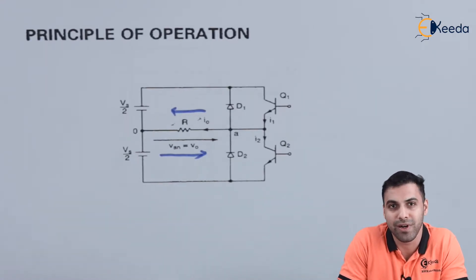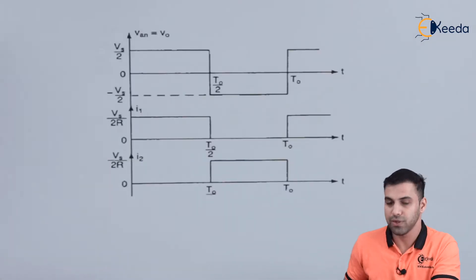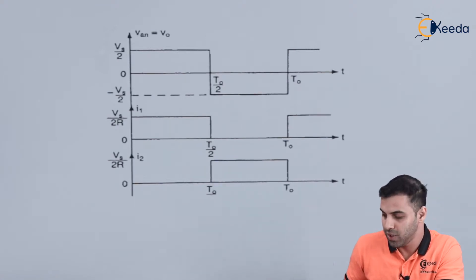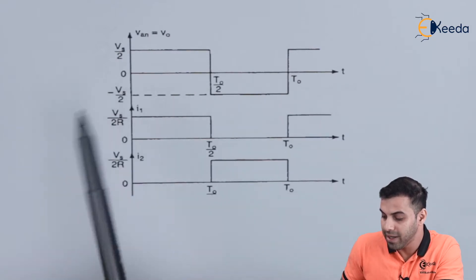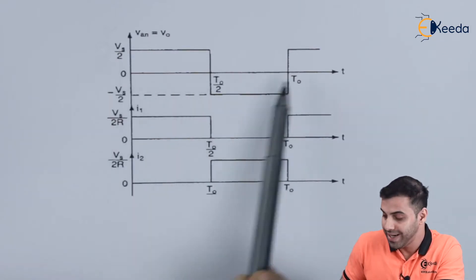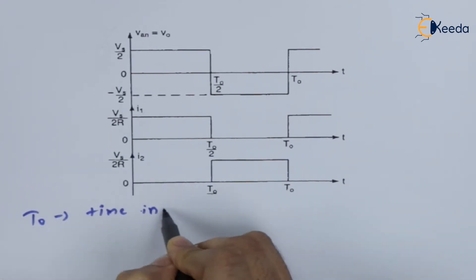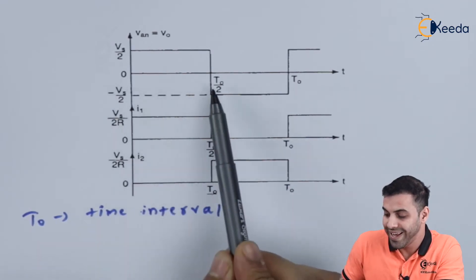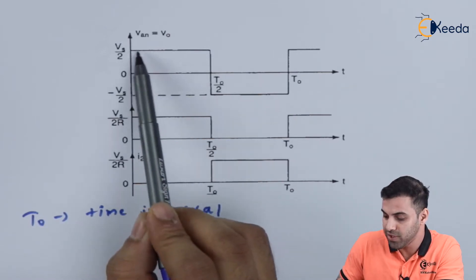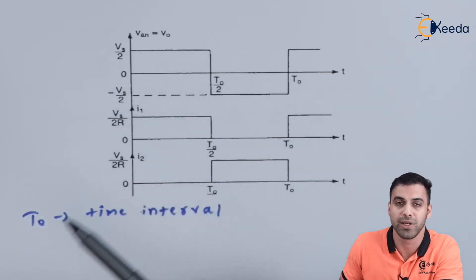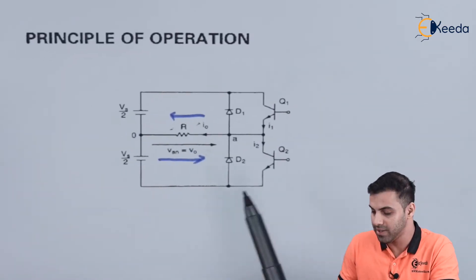Hence our DC voltage is easily converted to an AC voltage. Looking at this diagram, I am giving a supply of Vs/2. For the time interval 0 to T0/2 — where T0 is the total time period — as transistor Q1 is on, I am getting a positive voltage across the resistive load because the direction of current is from right to left, as you can clearly see in this diagram.